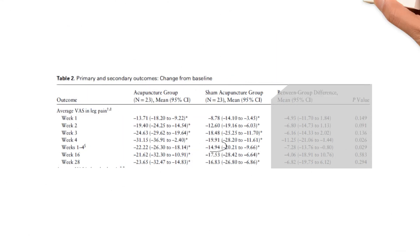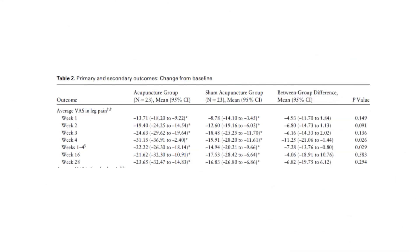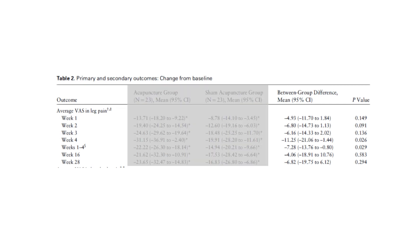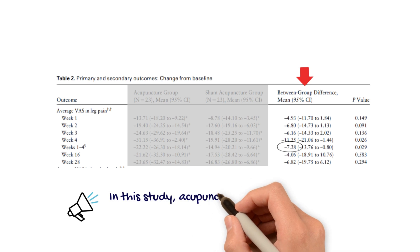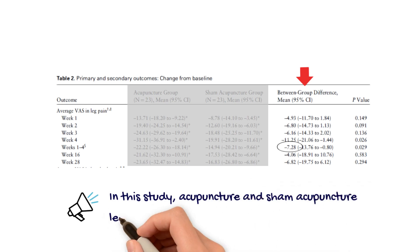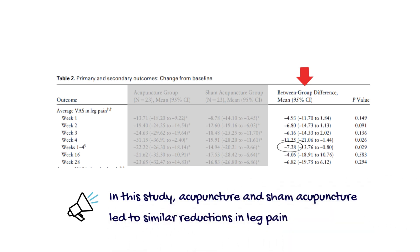The second and most important effect estimate provided is the difference between groups at each follow-up point. We see in the third column that the acupuncture group experienced a greater pain reduction by 7 out of 100 points. This is considered a very small difference in change scores between groups and it might not be clinically important. The findings suggest that acupuncture was not superior to sham in this particular study.